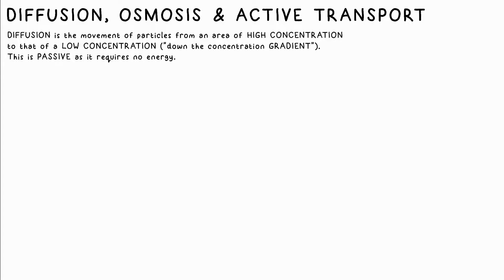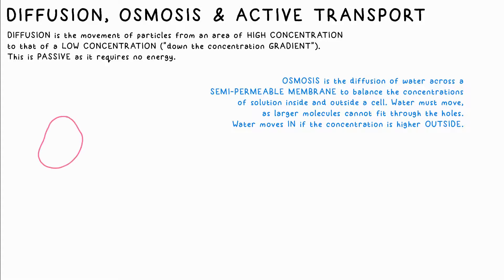This doesn't require any energy input, so we say it's passive. This will happen across a semi-permeable membrane if the holes are large enough for the molecules to move through. For example, water can pass through, but glucose will not — at least not by diffusion anyway.